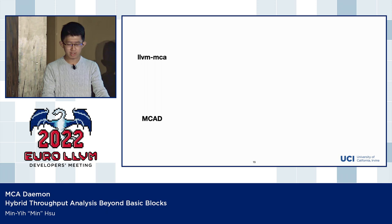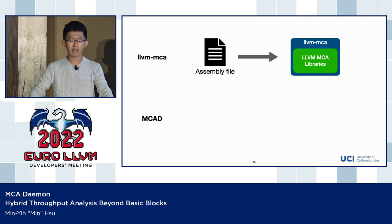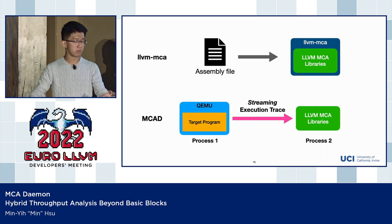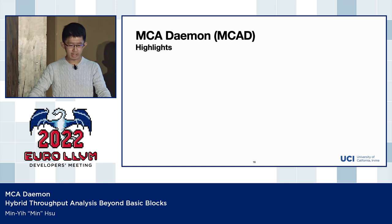Note that there are differences in the execution model between the original LLVM-MCA and MCAT. Original LLVM-MCA follows a more traditional static analysis tool fashion: you have an assembly file and feed it into LLVM-MCA, which uses the LLVM-MCA libraries. On the other hand, MCAT runs the dynamic runtime and static throughput tools in parallel in different processes, streaming instructions from the dynamic to the static part. The analysis is happening in real time.